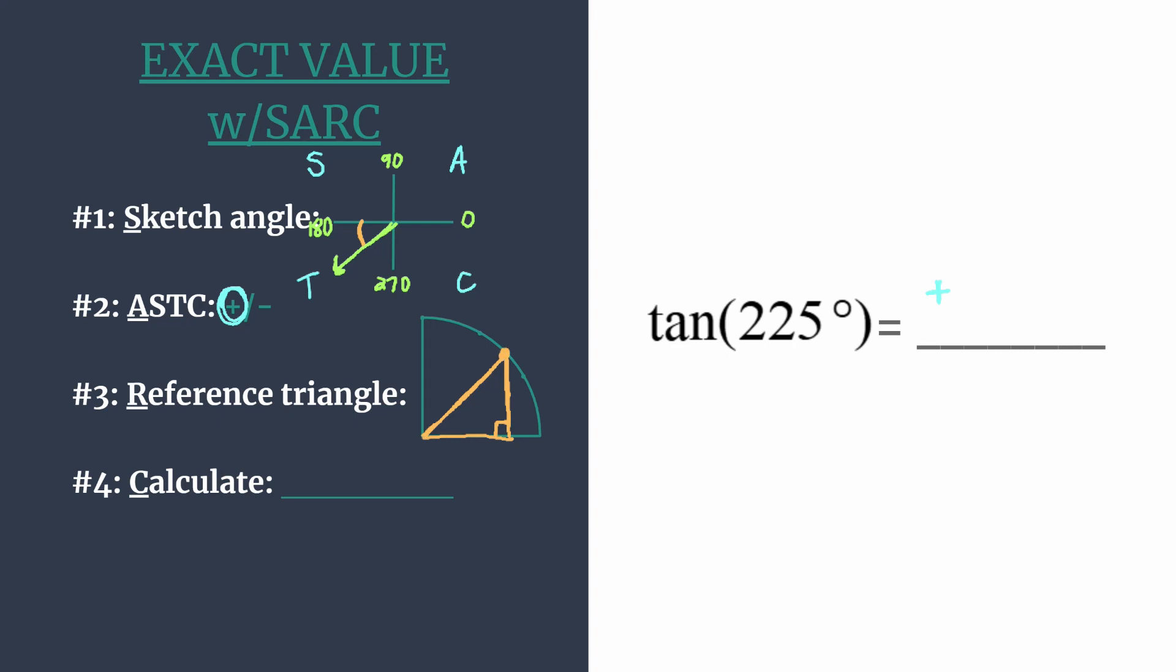Alright, we know that the corresponding ordered pair with the 45-45-90 triangle is going to be square root of 2 over 2 for the x and the y. Now that we have those coordinates, we're ready to make our calculation.